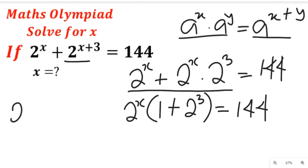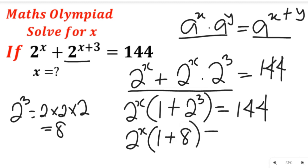Remember 2 to the power of 3 is equal to 2 times 2 times 2, right? That will be equal to 8. So if we bring that here, we'll have 2 to the power of x, all into bracket 1 plus 8, and that will be equal to 144.